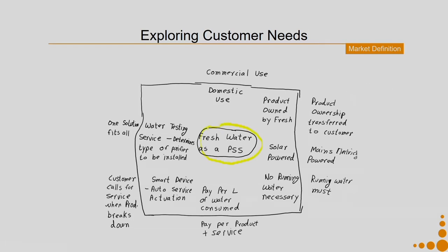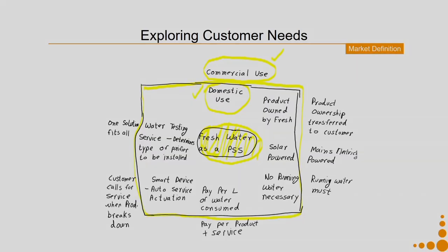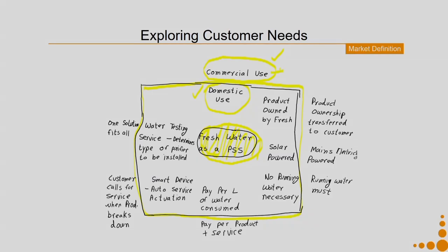In market definition, you put your PSS in the centre and create a boundary around it. Inside the boundary: what will your PSS be in the market definition. Outside the boundary: what it will not be. It is very important to put what it will not be outside, because it gives a much clearer picture. For example, when I say it is meant for domestic use and not for commercial use, in subsequent stages I can decide whether a small business with 4 to 5 employees is equivalent to domestic use. These meanings have a lot of implication on how you design your system and approach your customers.